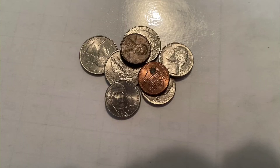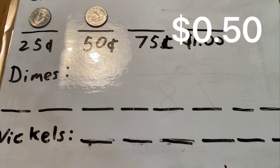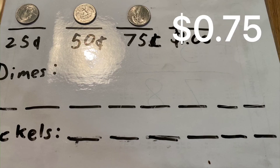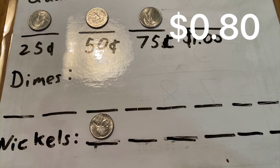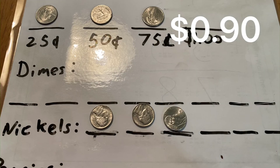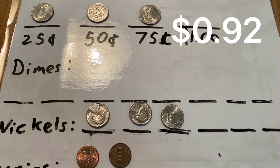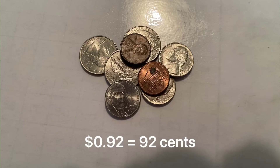Now, what do we do if one of our coin types is missing? Let's find out. These coins are sorted and ready to go, but look — we've got no dimes. Let's see what happens when we count. Starting with quarters: 25, 50, 75. Since we have no dimes, we just go straight to the nickels and count by fives: 80, 85, 90. And now the pennies: 91, 92. We have 92 cents.